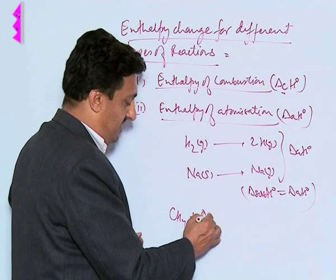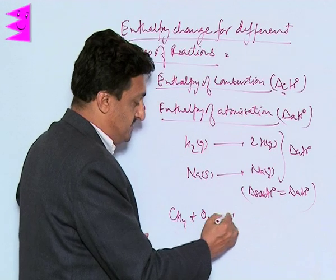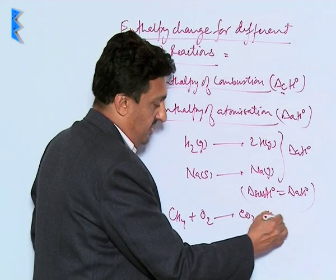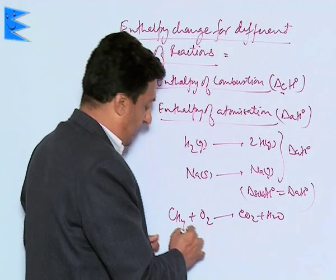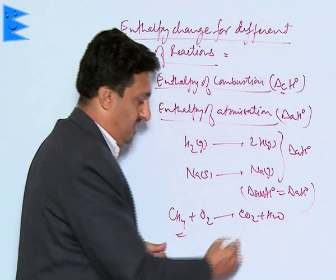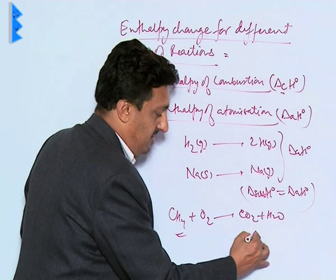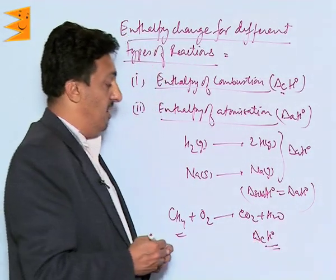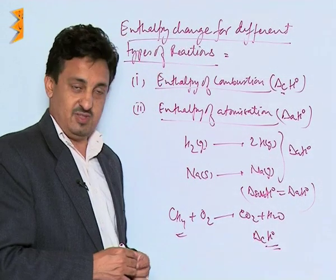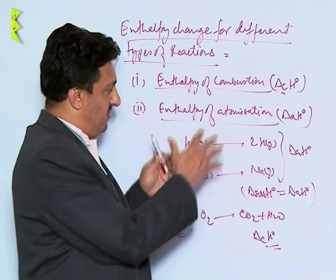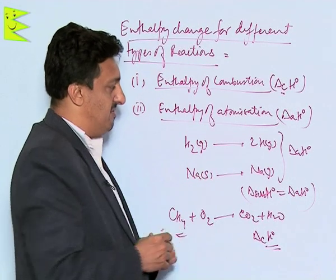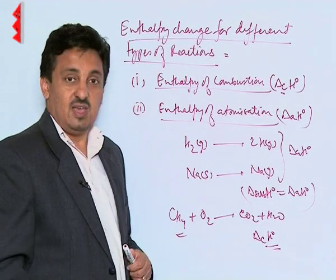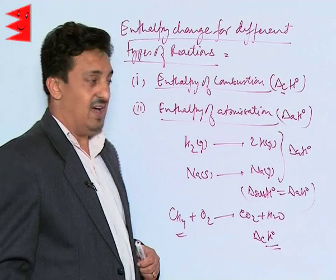As an example, when methane is combusted in oxygen, we get CO2 and H2O. The enthalpy change during this process is called the enthalpy of combustion of methane. So we have covered enthalpy of atomization and enthalpy of combustion, and then the most important — bond enthalpies or bond dissociation enthalpies.